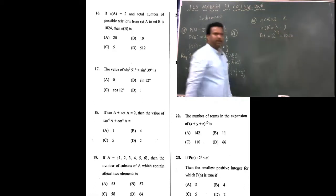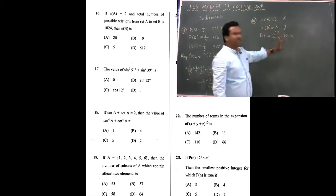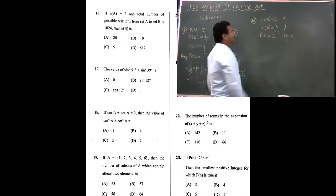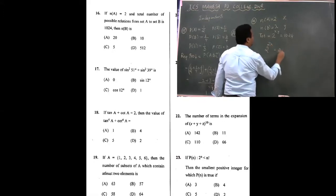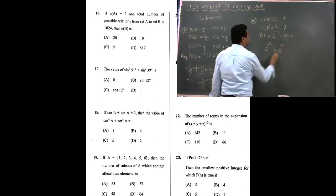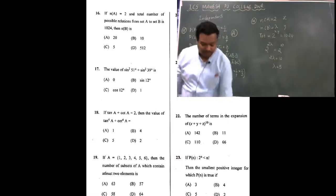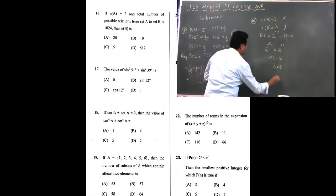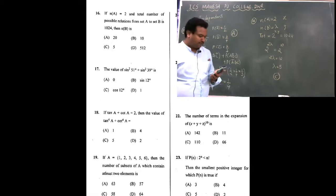I repeat: set A has x elements, set B has y elements, and the total number of relations is equal to 2 to the power x into y. But in this case, 2 to the power 2 lambda equals 2 to the power 10. Bases are equal, powers must be equal. What should be the value of lambda? Five. The answer is option C. Option C is correct. Clear?